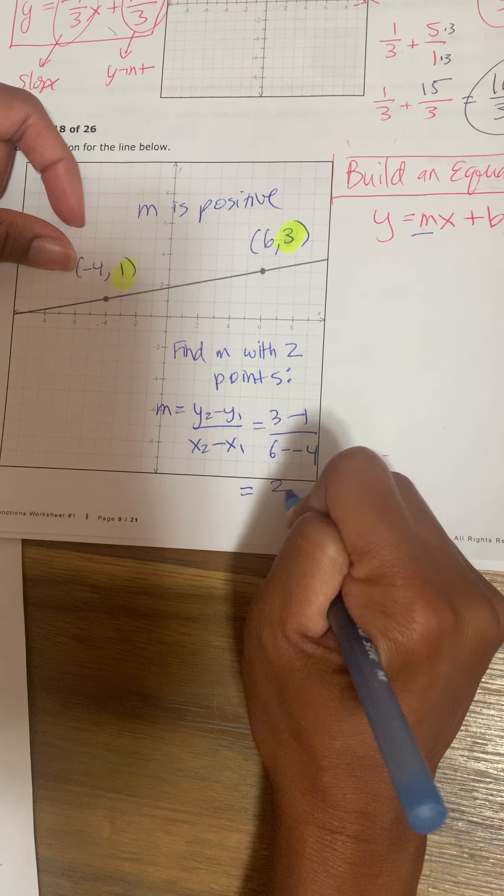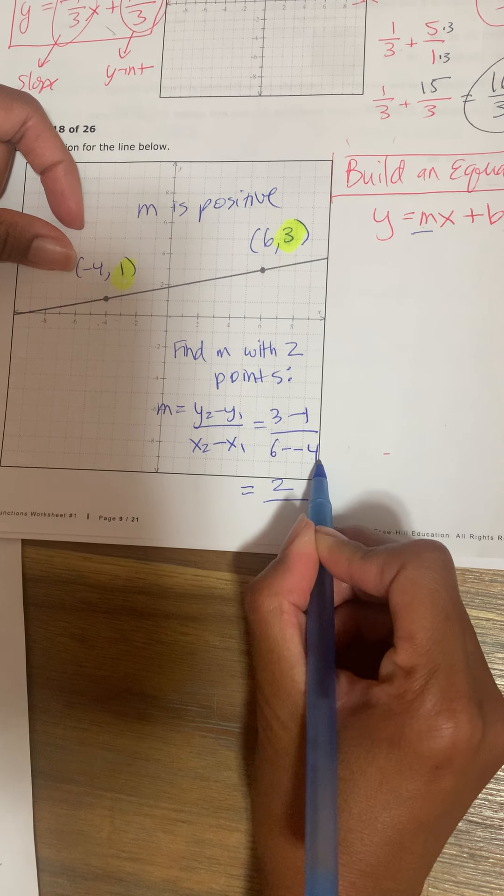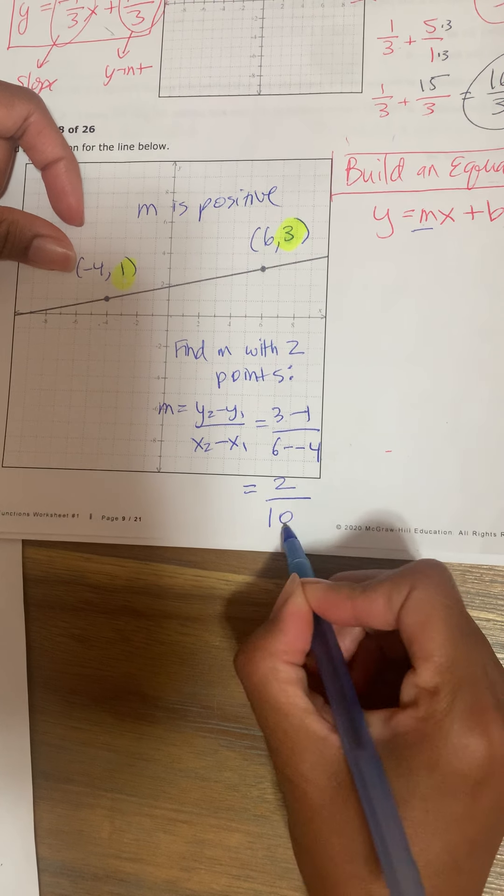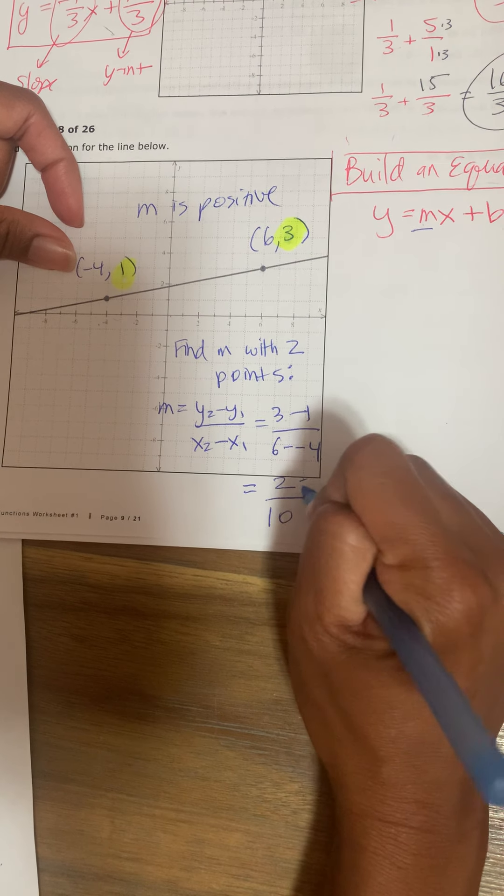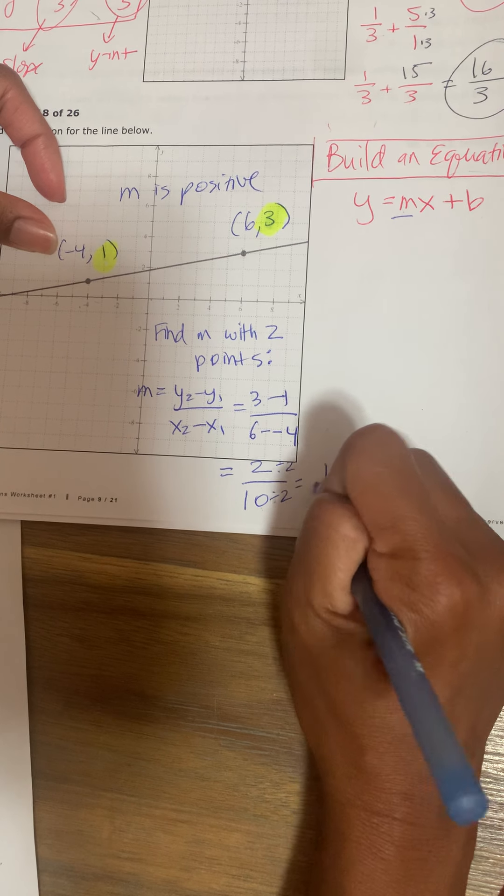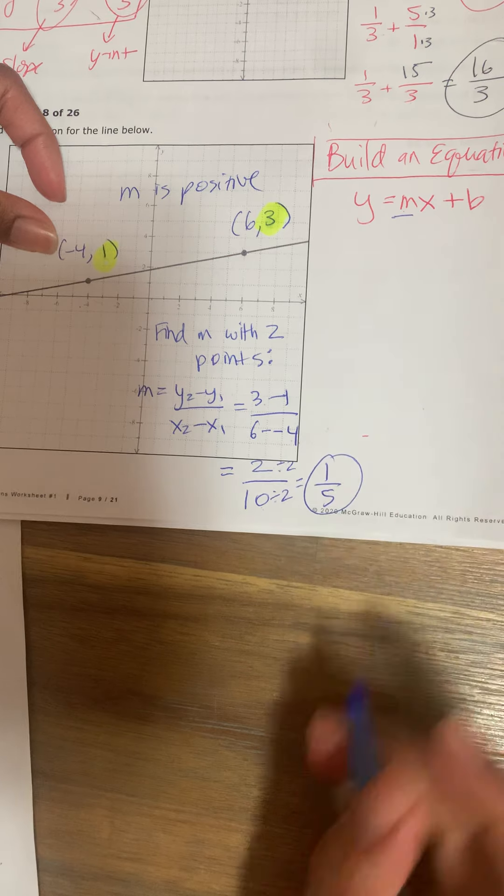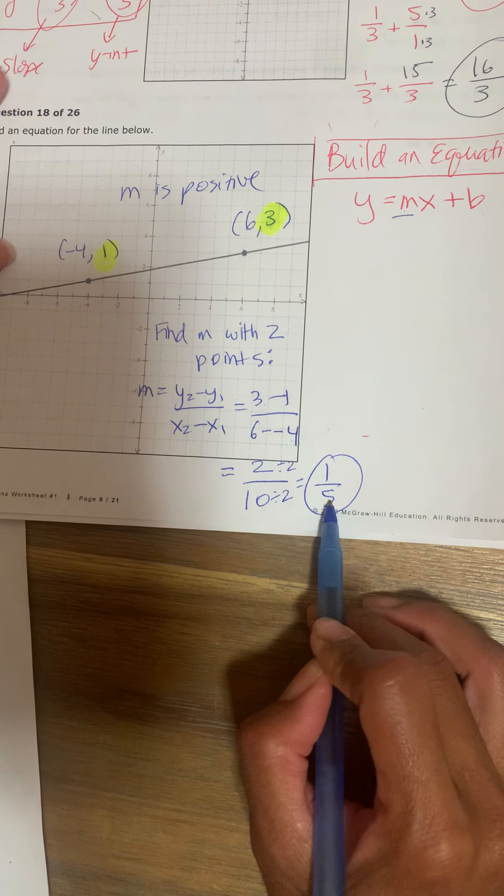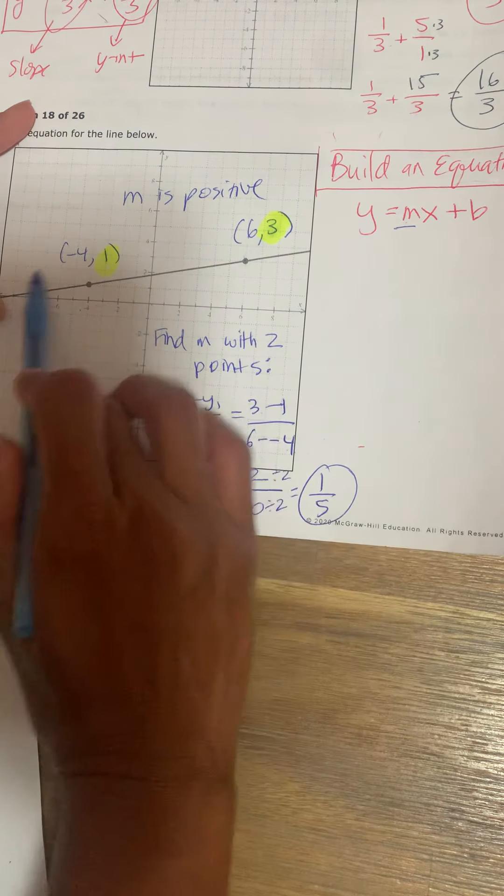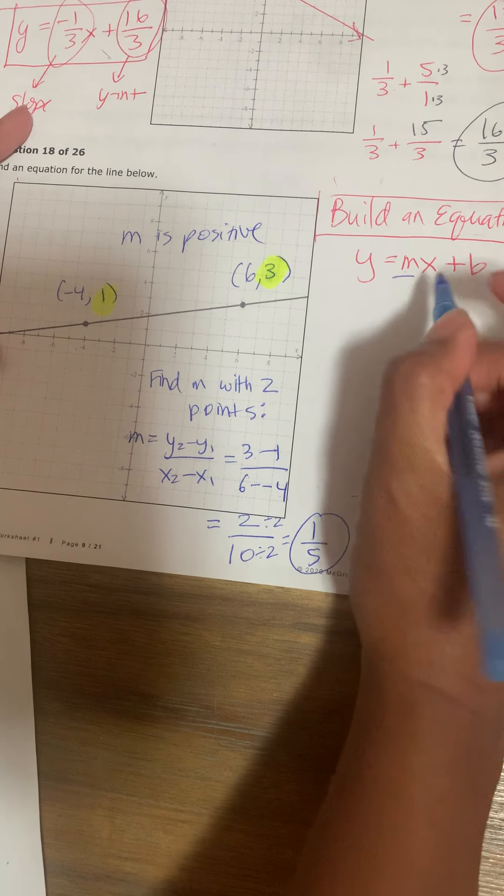3 minus 1 is 2. 6 minus negative 4 is 6 plus 4, which is 10. The top and the bottom are divisible by 2. So divide both up and down by 2, I get 1 over 5. So the slope is 1 fifth. And yes, it is positive. That confirms that this line is going upwards.